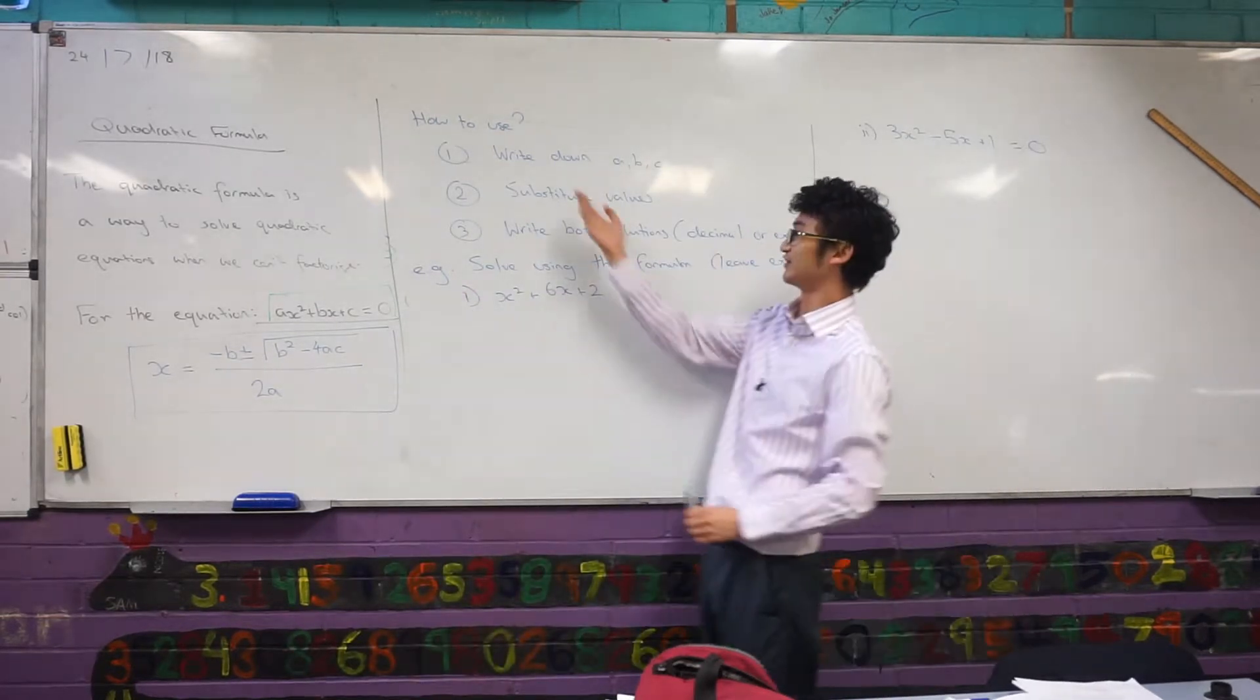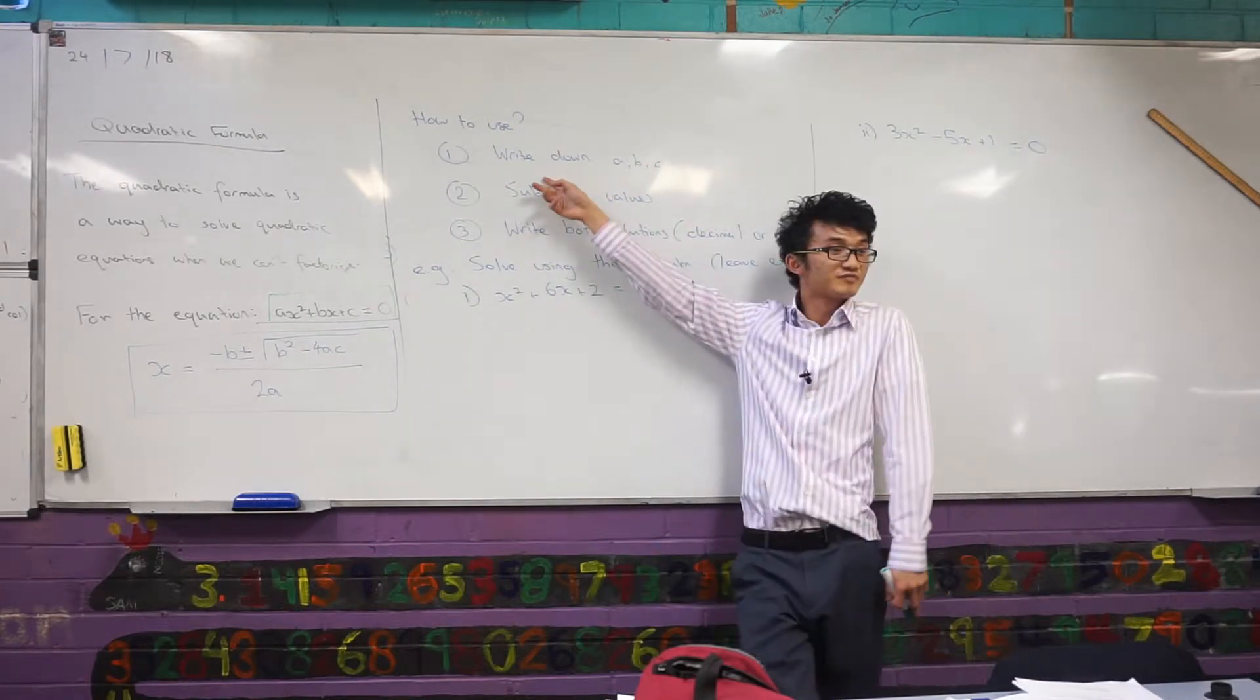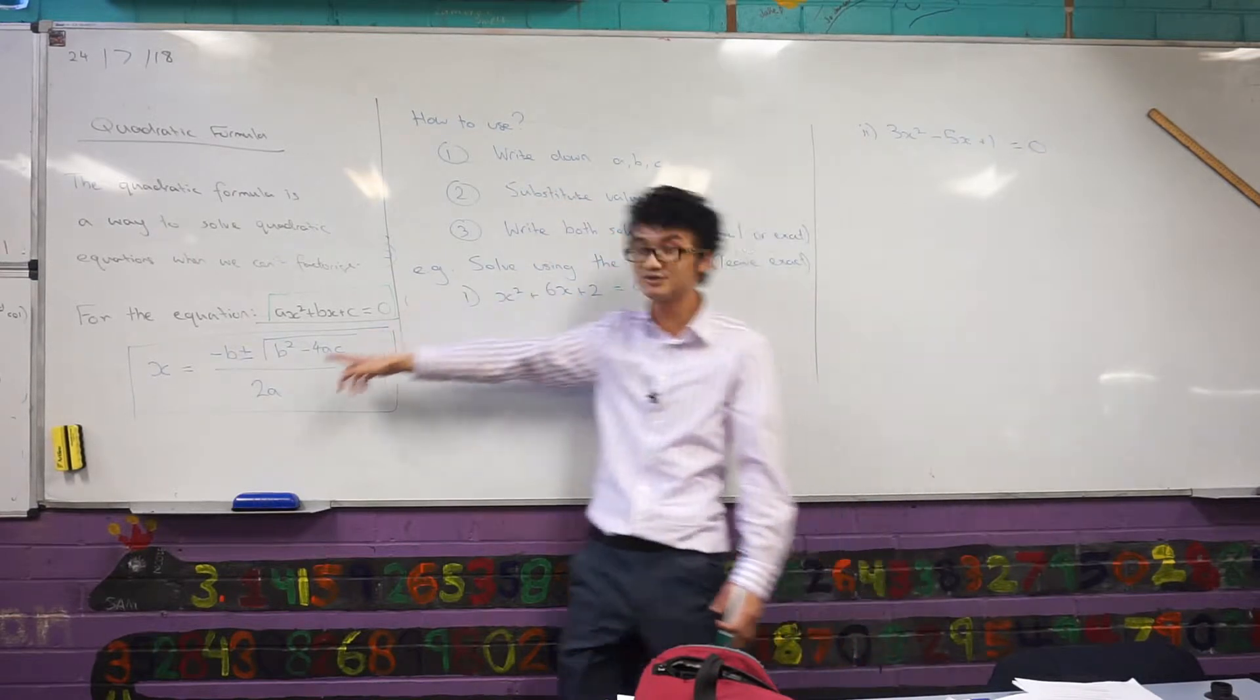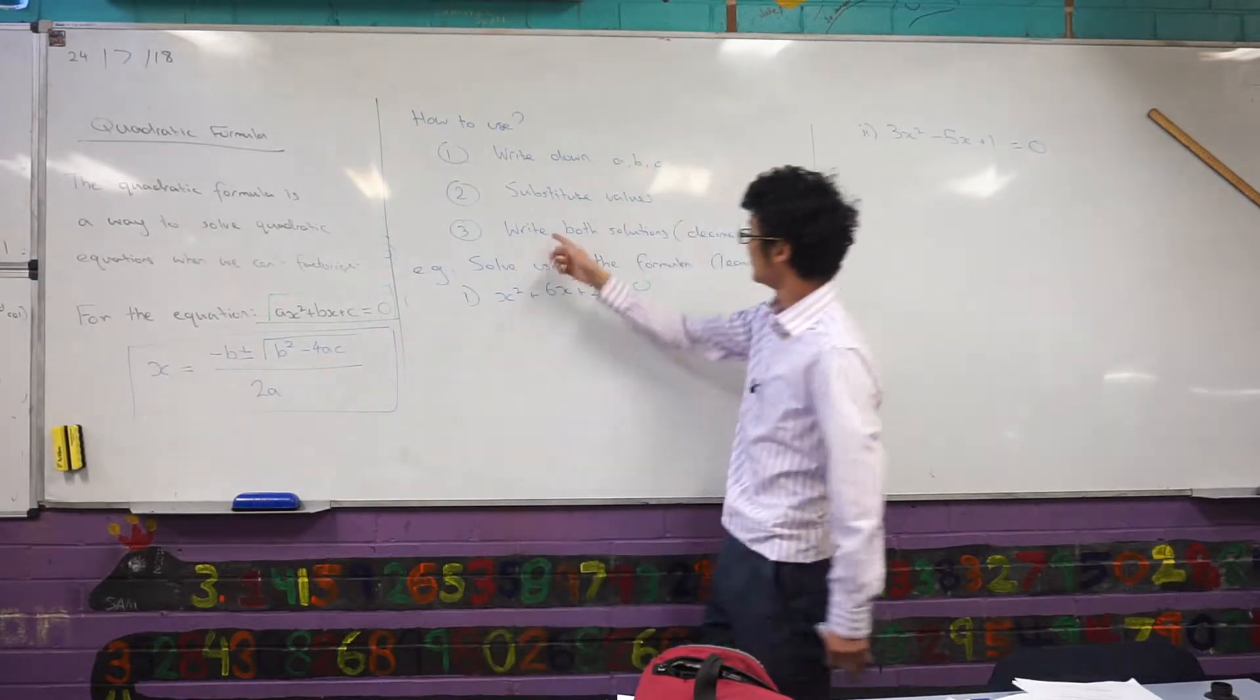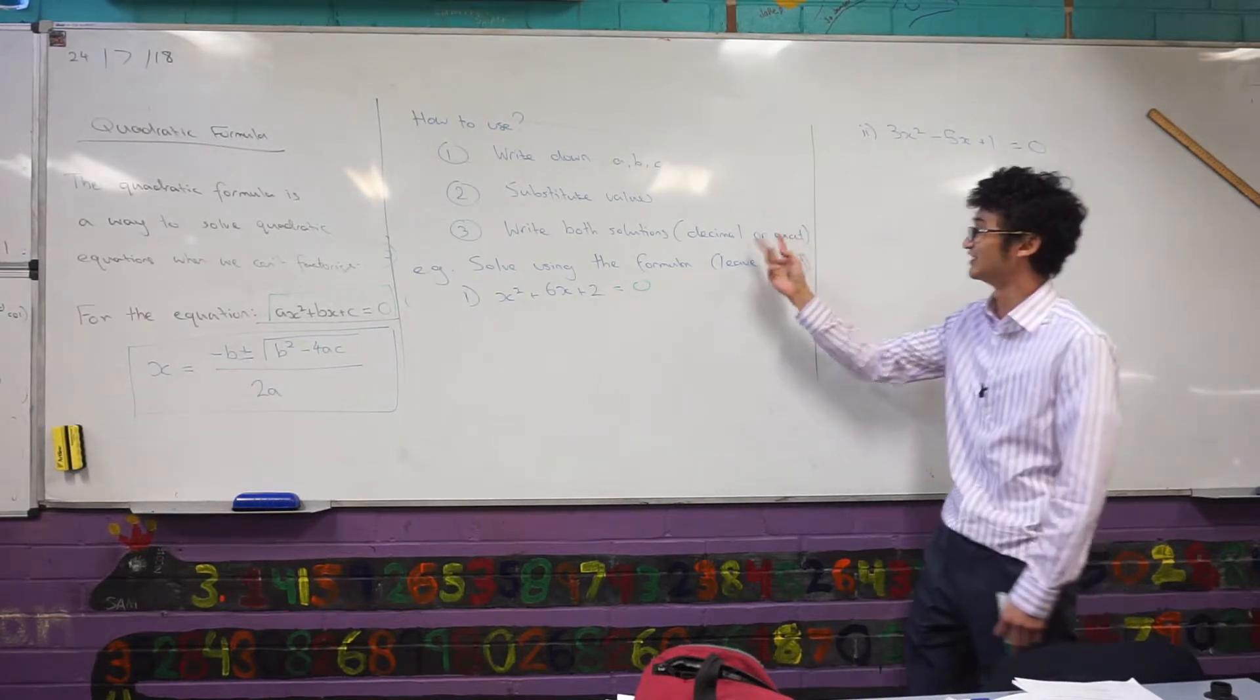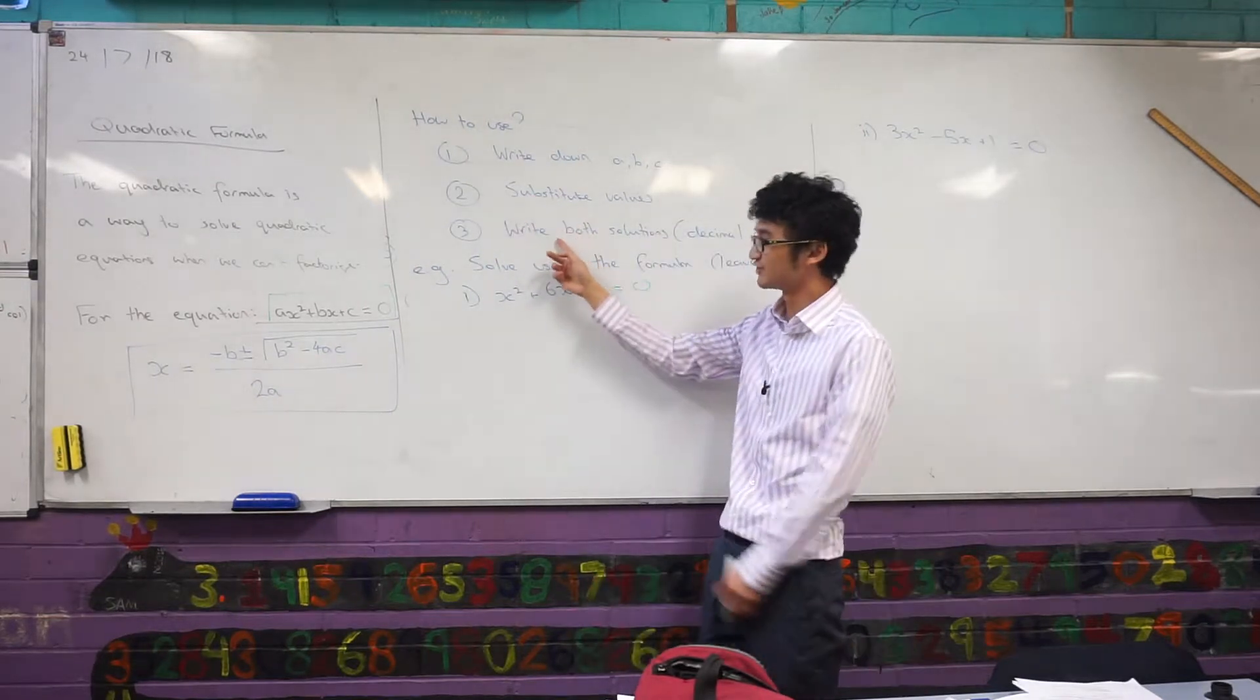If you think back to the exercise you were just doing, you're matching the letters for a, b, and c for your quadratic equations and that's all you're doing. So the three steps to apply this quadratic formula: first step, write down a, b, and c. Second step, substitute the values into this equation. Third step, write both solutions, either decimal or exact. I'll explain that in a moment, but let's just look at this third step.